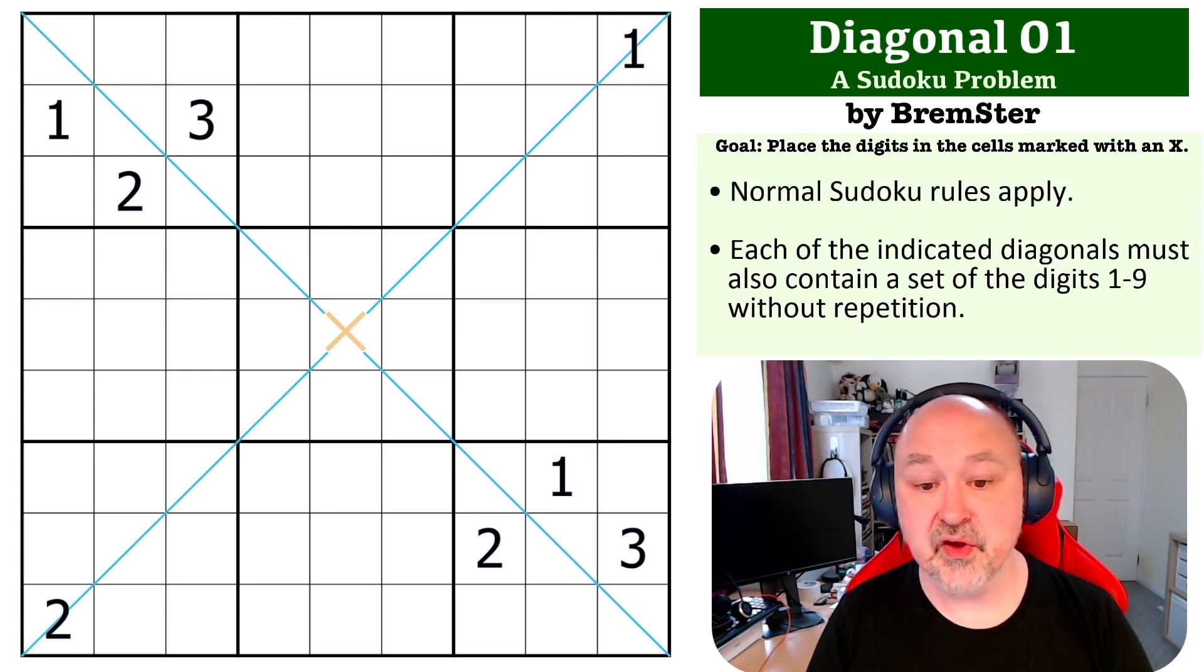So the goal of course is to find the digit that goes into the cell marked with an X, in this case row five, column five.